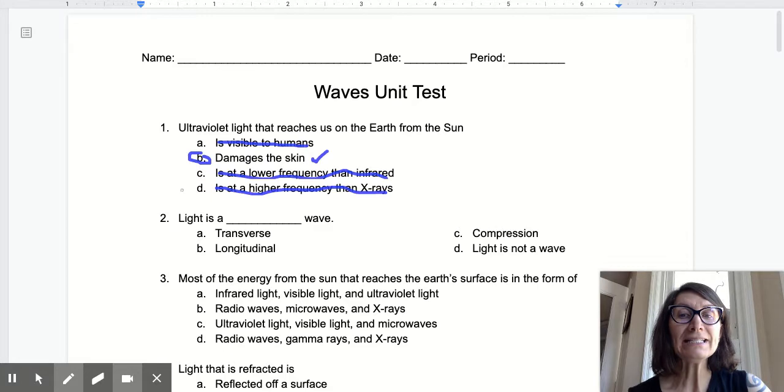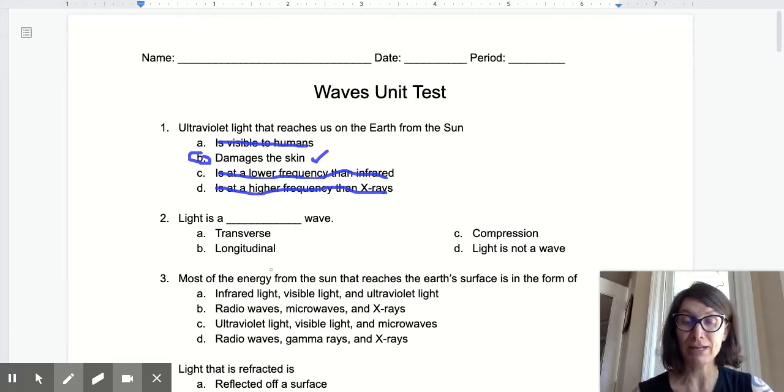Light is a blank wave. Is light transverse? Is light longitudinal? Is light compression? Light is not a wave. Light is a wave. Compression and longitudinal are synonyms for sound waves. Light is a transverse wave.